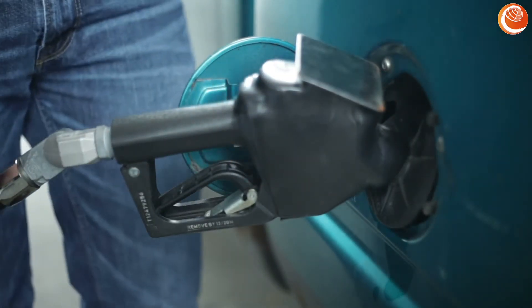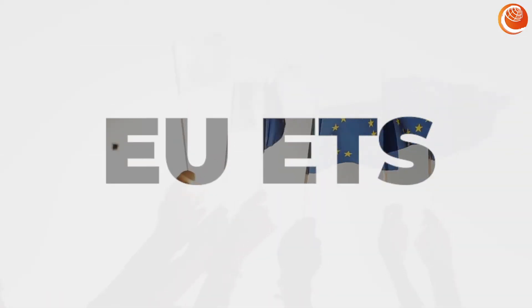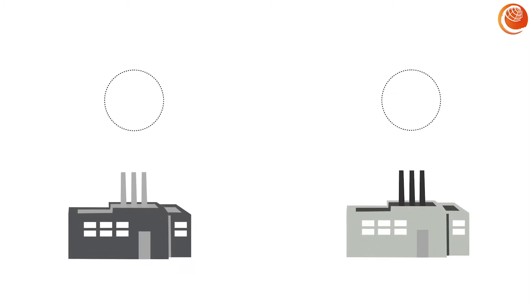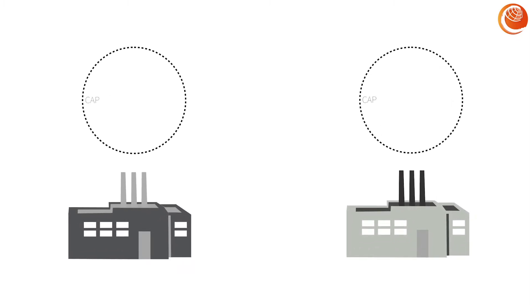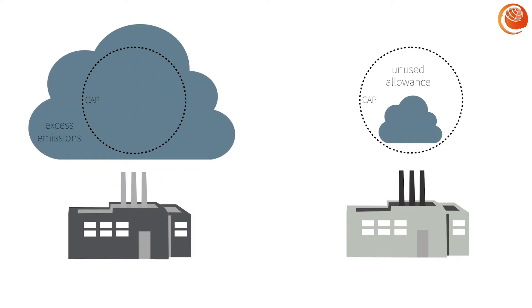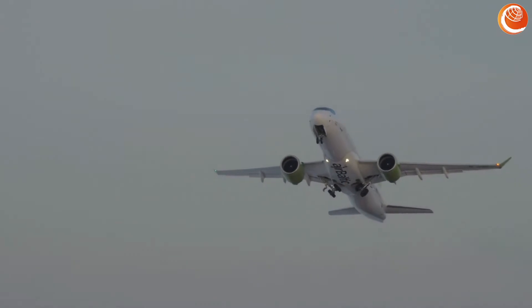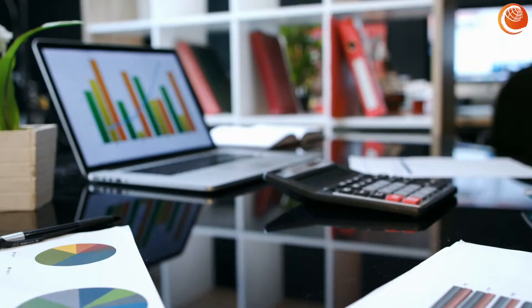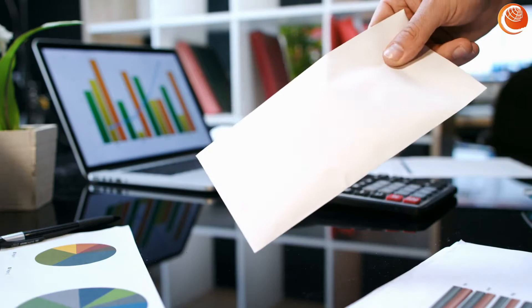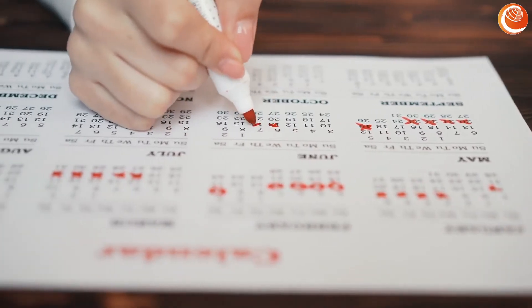An alternative to a simple carbon tax is a cap-and-trade system, such as the European Union Emission Trading System. The EU ETS, like other cap-and-trade systems, is based upon a limit, or cap, being set on the amount of emissions the companies included within the system may emit. The system applies to power and heat generation, energy-intensive sectors, commercial aviation, and to certain gases, including nitrous oxide and perfluorocarbons. These companies receive or may purchase a limited amount of emission allowances to cover their emissions for a defined period.